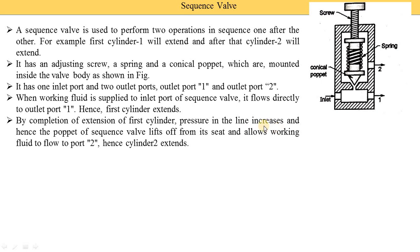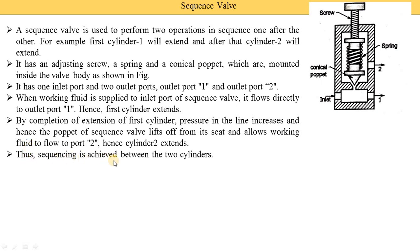Pressure in the line increases and hence the poppet of the sequence valve is lifted off from its seat, allowing the working fluid to flow to port two, so cylinder two is extended. When the pressure increases, the poppet is lifted off, and oil from the inlet port is supplied to port two, and from port two it is supplied to cylinder two, so cylinder two starts to extend. The word 'fluid' is used because the sequence valve is used in hydraulic as well as pneumatic systems. Sequencing is thus achieved between the two cylinders.